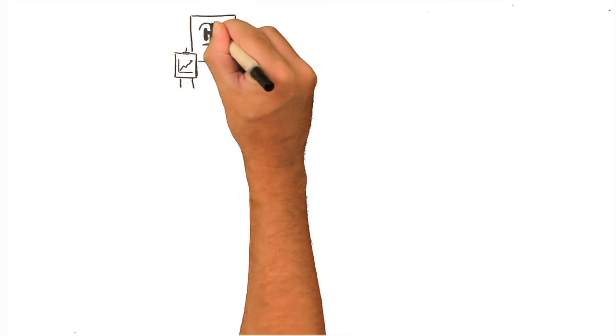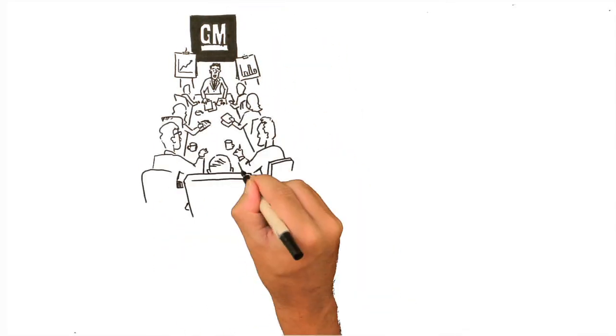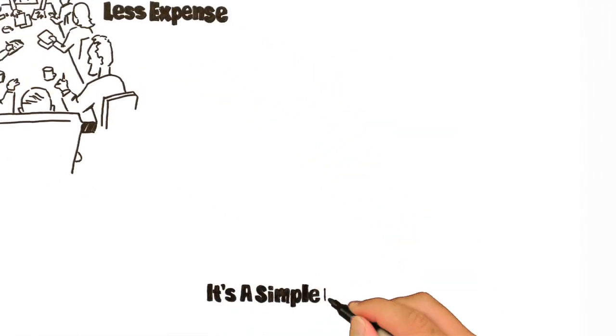If you're running General Electric or General Motors, your stockholders want higher productivity. They want more product coming out for less expense. It's a simple equation.